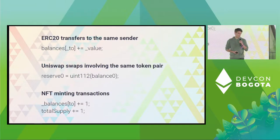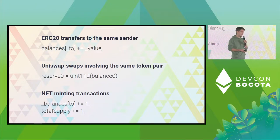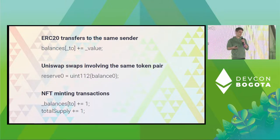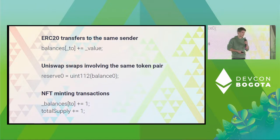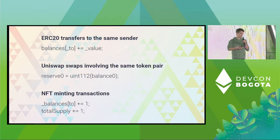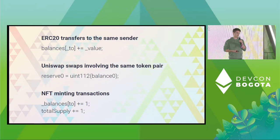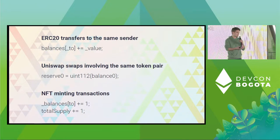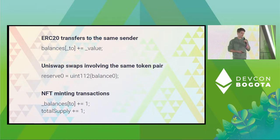Some simple examples of these dependencies: if you have two transactions to the same ERC20 token sending from the same sender to the same receiver, they will conflict on the balances mapping. Or if you have two transactions swapping the same token pair on Uniswap, both of them will modify the reserve variables, which is another kind of conflict. Or if two transactions are minting an NFT, they can conflict on total supply if the contract is tracking that.